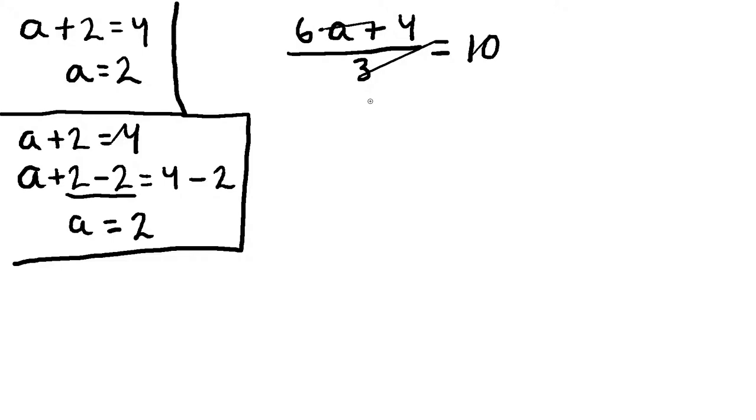Now this number 3 here is kind of in our way. We want to move that away from the side where the magic number is. To remove a division we do the opposite operation to division which is multiplication. So what we start by doing is that we multiply both sides by 3. So we have six times a plus four divided by three, everything times 3, and we need to do the same operation on the right hand side so we have 10 times 3. Now division and multiplication cancel out so the three here cancels out the three here and we're left with